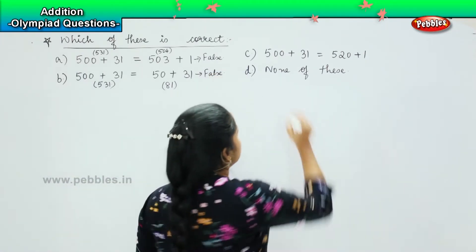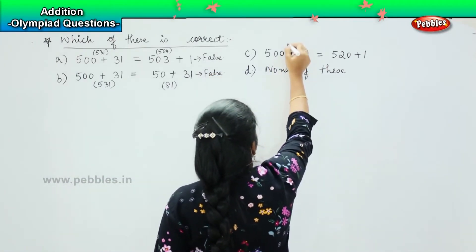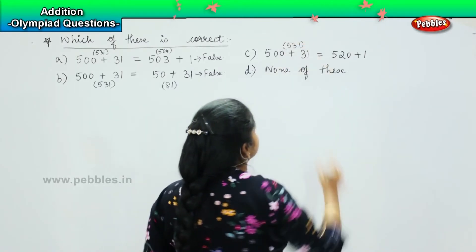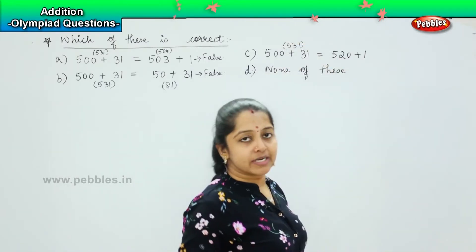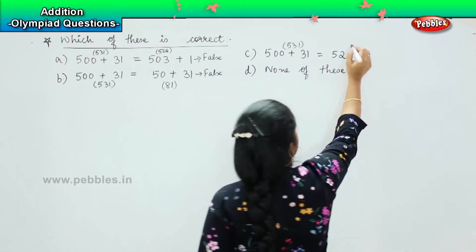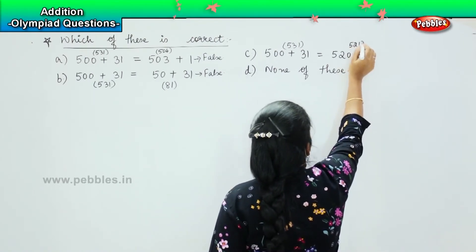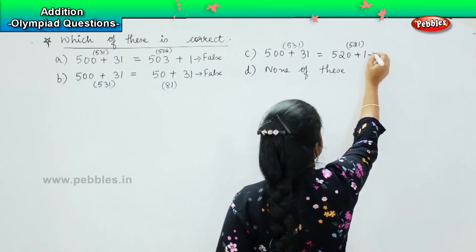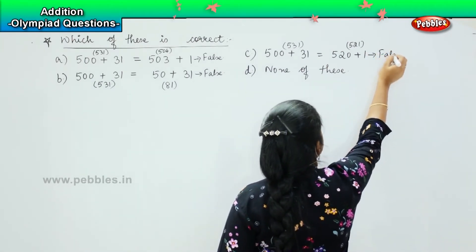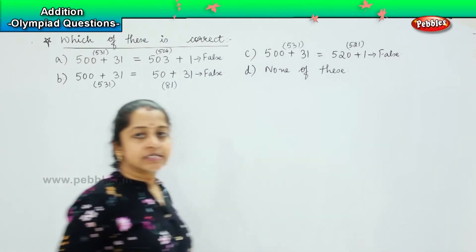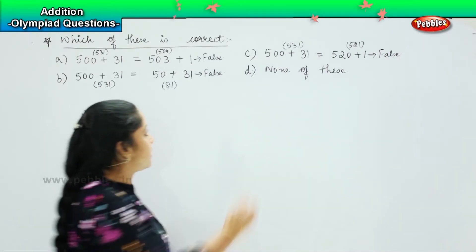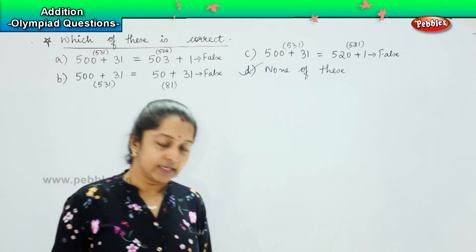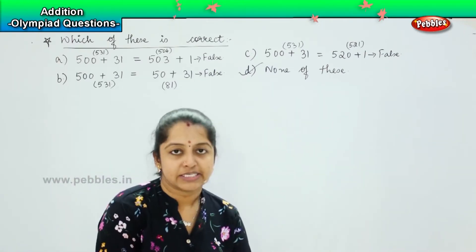Coming to the third one: 500 plus 31 is how much? 531. And 520 plus 1 is how much? It's 521. So is 531 and 521 the same? No. So this is also a false statement. So what is your right answer, children? The right answer is option D — none of them are correct. Clear? Shall we move ahead?